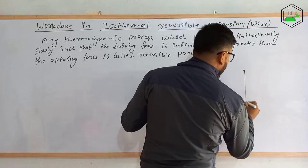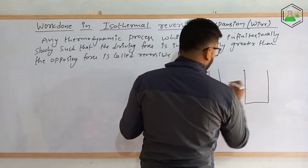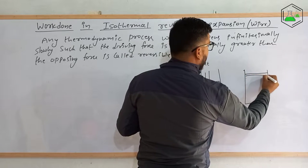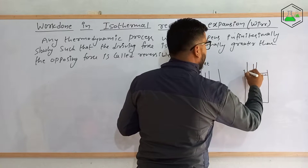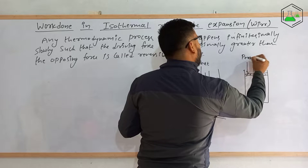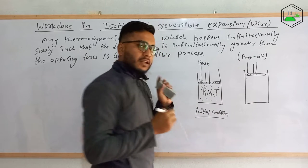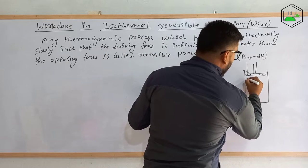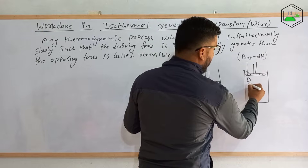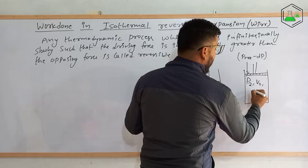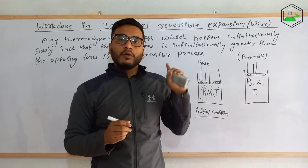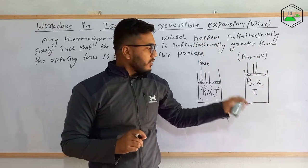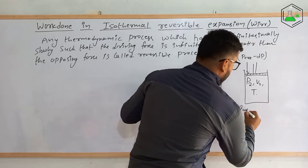Now suppose the external pressure is decreased. Then obviously this piston will move up. The external pressure is decreased by dP — a slight change in external pressure. We know that when pressure decreases, the volume of the substance increases. So the new condition here will be: pressure will be P2, volume will be V2, and temperature will be T. Volume has been increased by dV. Pressure decreases by dP, volume increases by dV. This is the final state.